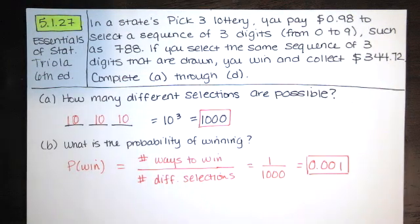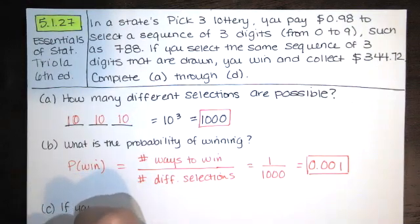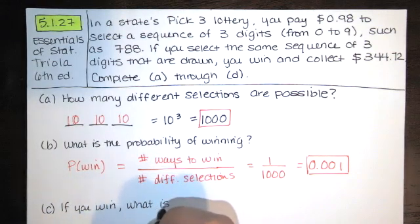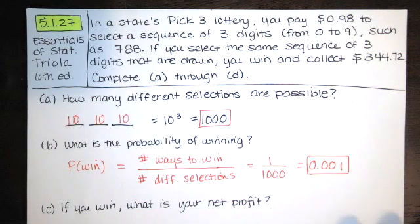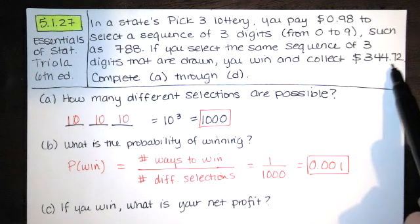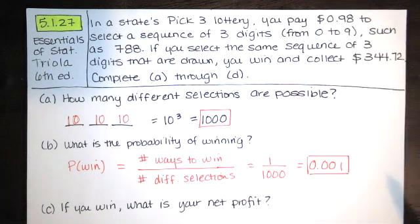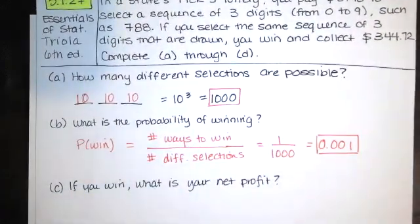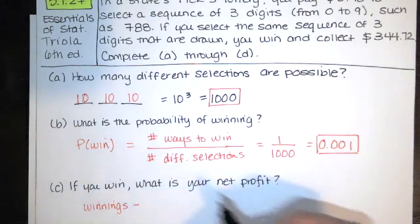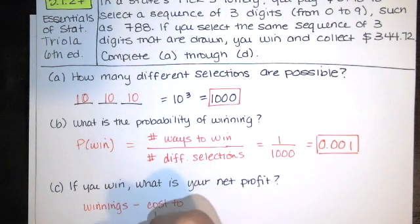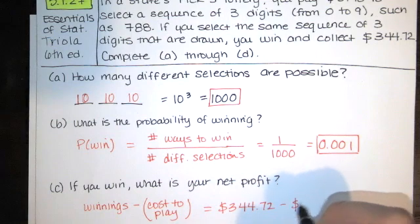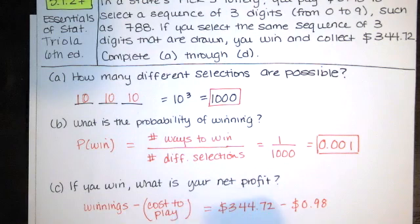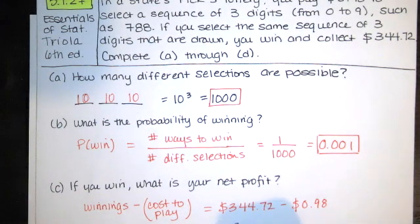And the third part of the question says, if you win, what is your net profit? Well, we're told that you win and collect $344.72, but you already paid 98 cents for that ticket. So your profit comes from taking your winnings and subtracting the cost to play. So you're taking that $344.72 and you're subtracting that 98 cents. So we end up with $343.74.